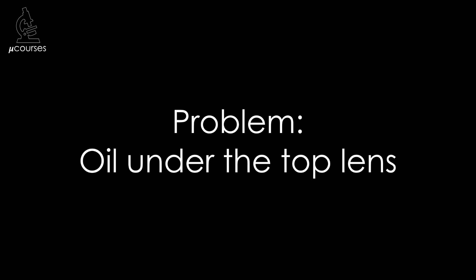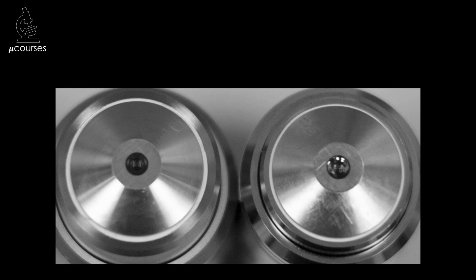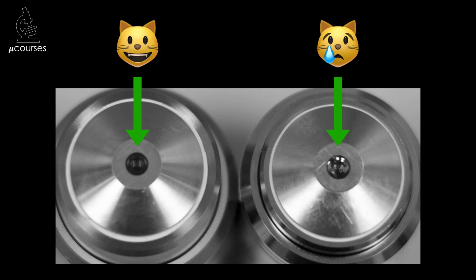Another problem that can occur is immersion oil seeping underneath the top lens of the objective. Over time, the cement that holds the top lens into place can become porous, and immersion oil can seep through those pores and get underneath the top lens. It can be difficult to identify oil under a top lens at first — it's easiest if you compare it to a lens that's fine. The lens that has oil under it will show the reflection of that oil underneath the top lens. Unfortunately, if oil does accumulate under the top lens, the objective lens needs to be shipped back to the manufacturer so they can take the top lens out, clean it, and replace it.